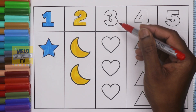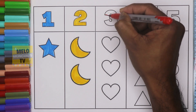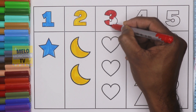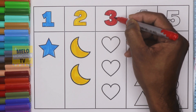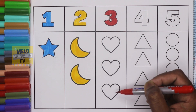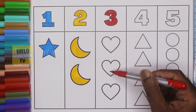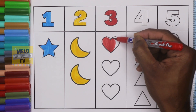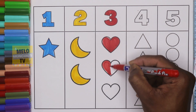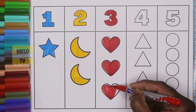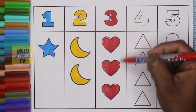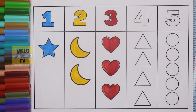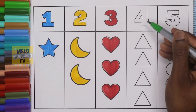So two crescents and this one is yellow color. Next I'll take red color to color number three. This is three — T H R E E, three. Let's color it. This is number three and these are hearts — one heart, two heart, and three heart. Let's color these.